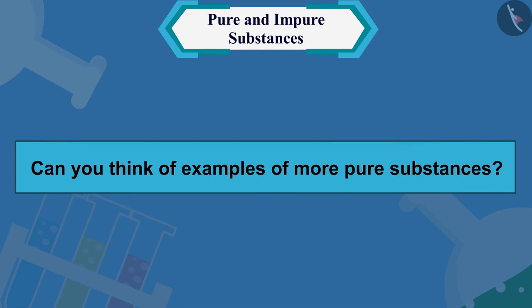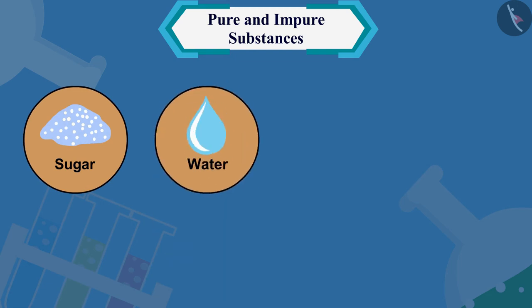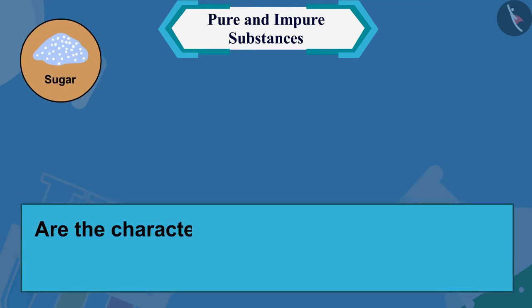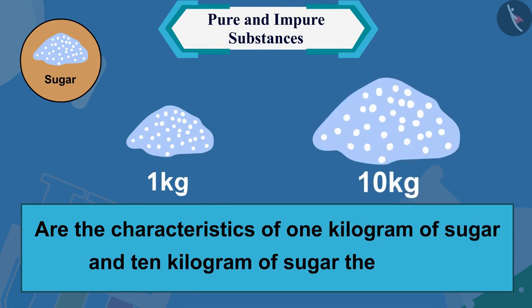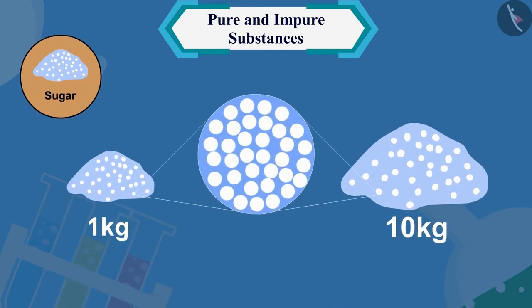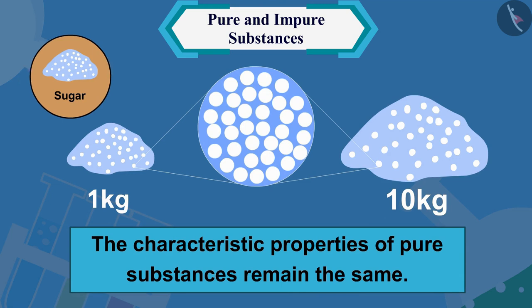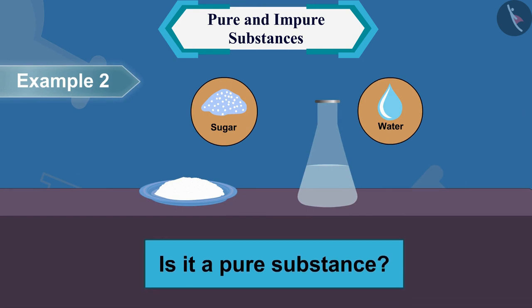Can you think of examples of more pure substances? Yes — sugar, water, gold, and diamond are examples of some more pure substances. Are the characteristics of 1 kilogram of sugar and 10 kilograms of sugar the same? Yes. From this we can conclude that the characteristic properties of pure substances remain the same.